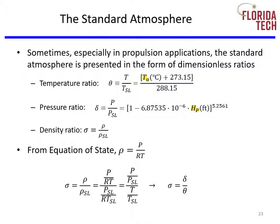Sometimes, especially in propulsion applications, the standard atmosphere is presented as dimensionless ratios. The temperature ratio theta is your ambient temperature divided by the sea level temperature on a standard day. The pressure ratio delta is your local pressure divided by standard sea level pressure; there's also an equation to get delta directly from pressure altitude in feet. The density ratio sigma is local density divided by sea level density on a standard day. Using the equation of state, sigma equals delta divided by theta.